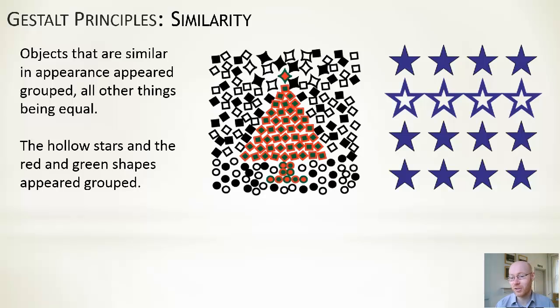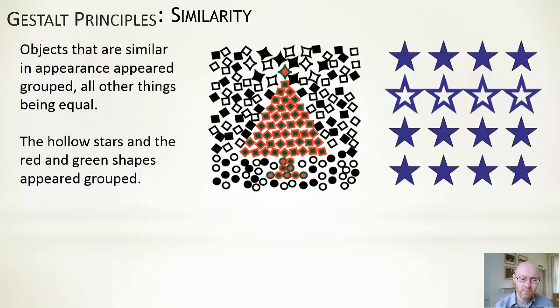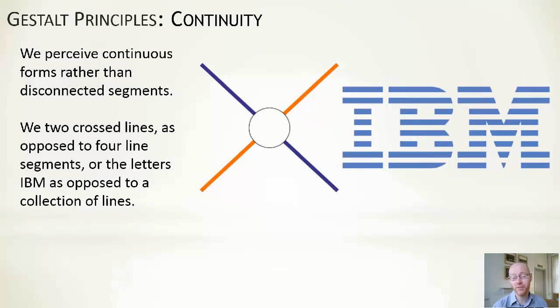Continuity is another one of the principles. The IBM logo is quite famous. So we perceive it as IBM as opposed to a large collection of line segments. And if you have a look at the two crossed lines, we generally perceive that as an orange and a purple line with a white circle on top of them as opposed to a circle from which we have four line segments emerging.